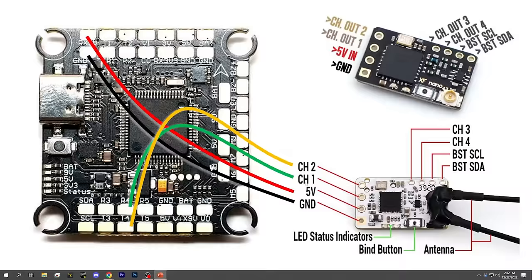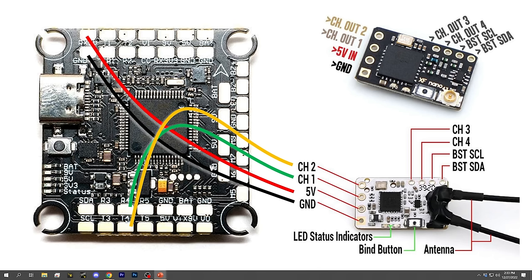Channel 1 and Channel 2 go to a TX and an RX pad on the flight controller. You can choose any TX and RX pad you like, as long as they're not being used by anything else — you can't put two things on the same UART. UART is what these TX and RX pads are called. In this case I selected T4 and R4, but T3/R3 or T1/R1 would work just as well. Channel 1 goes to the R pad and Channel 2 goes to the T pad for that UART number, and that's the wiring done.